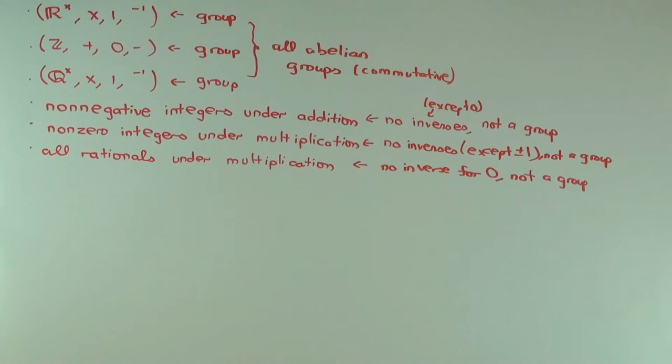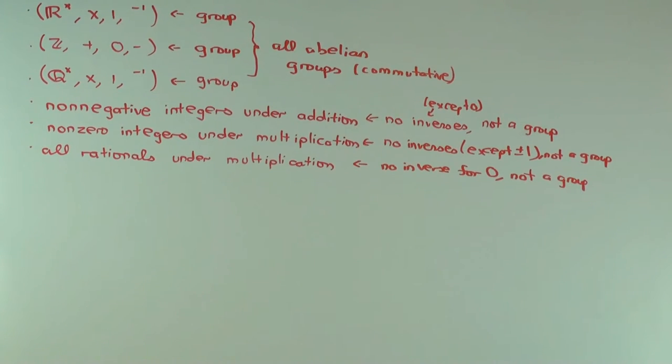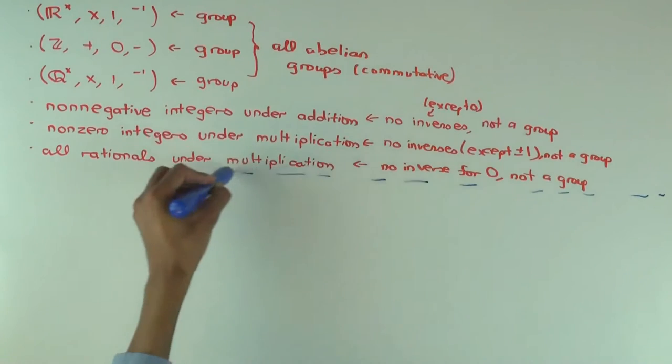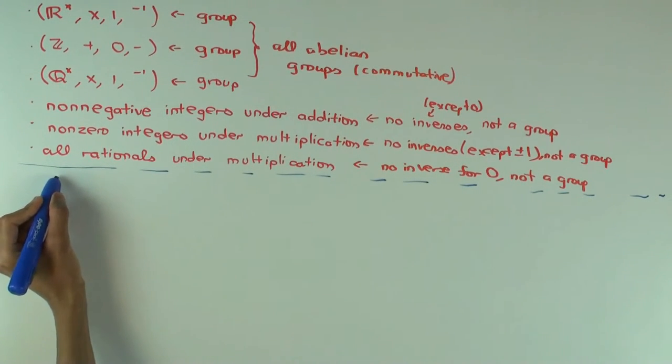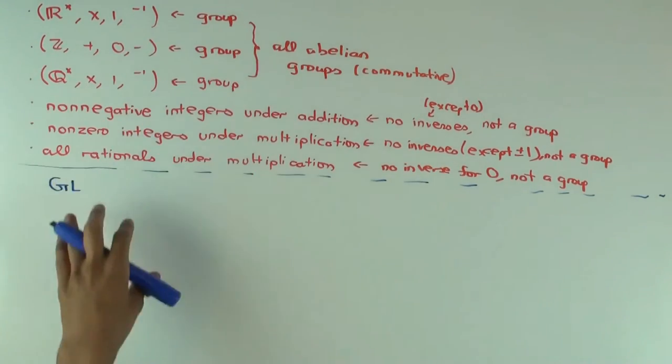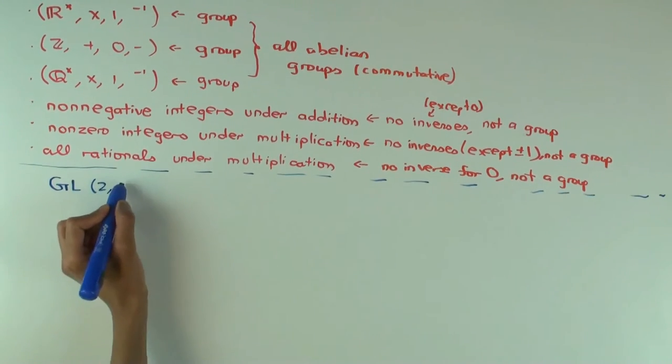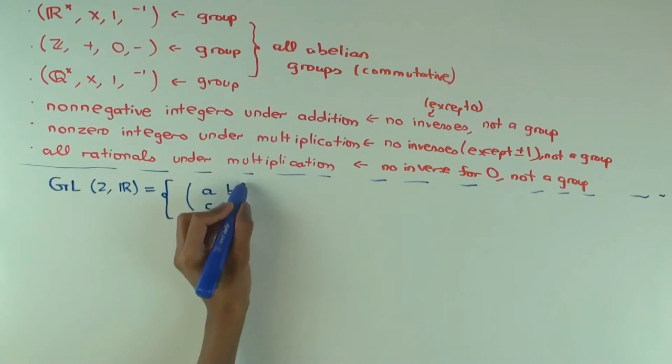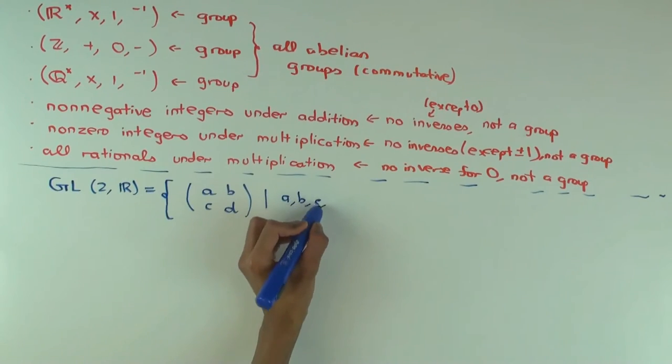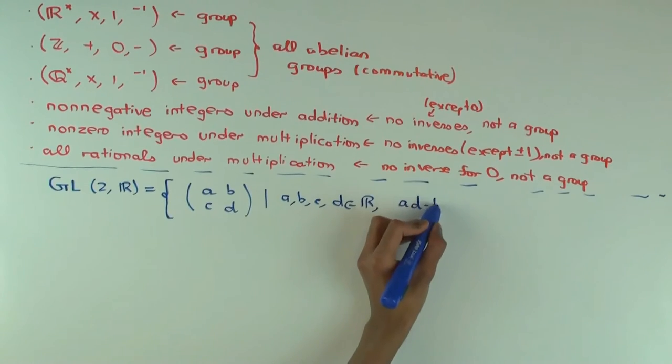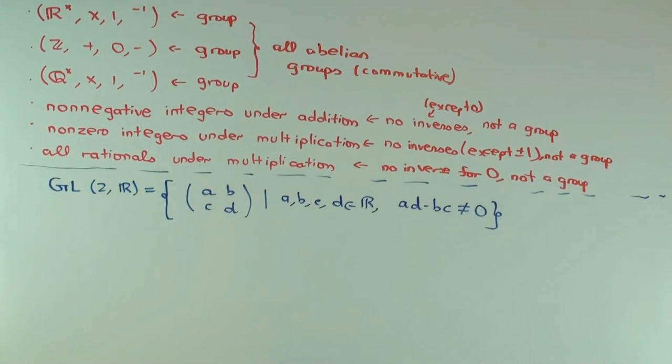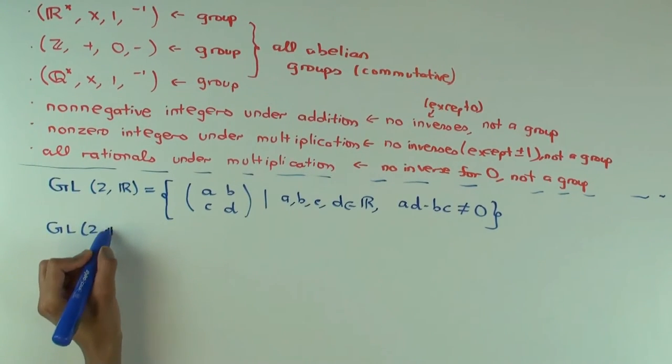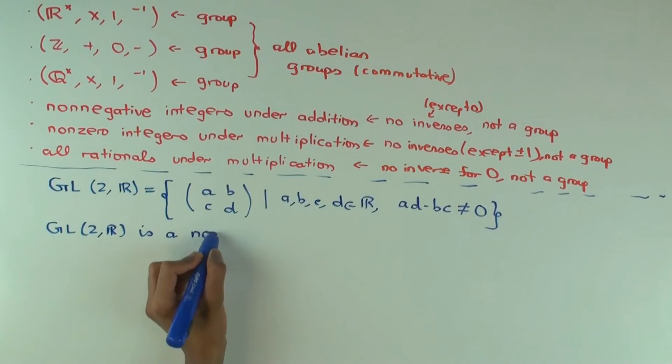So, since you've seen matrices, I'll take one example of matrices. Consider, let's call this group. By the way, if you're seeing this for the first time, you don't have to go on to this part. This is just an example of a non-abelian thing for people who have seen matrices. GL(2,R), the two-by-two matrices where the entries are real numbers and the determinant is non-zero. Now I'm claiming that this is a group under matrix multiplication. Do you see that? Yes. Why?